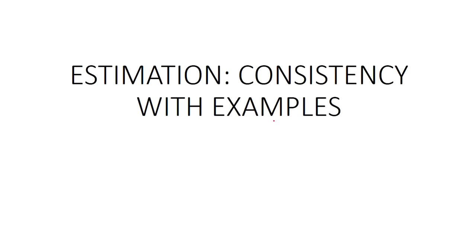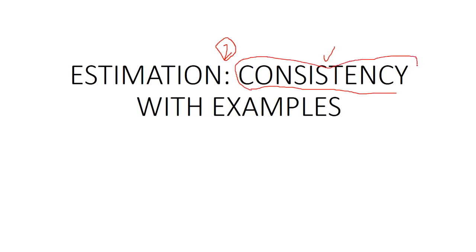Now this is the second property of best estimation, that is consistency. What do we mean by consistency? We will discuss this with more examples in this video. First, the general meaning of consistency is convergence in probability.